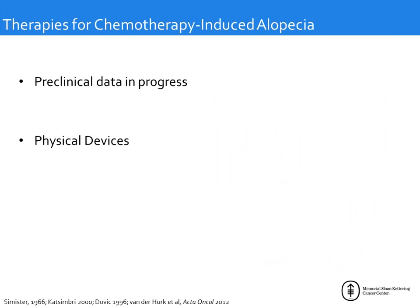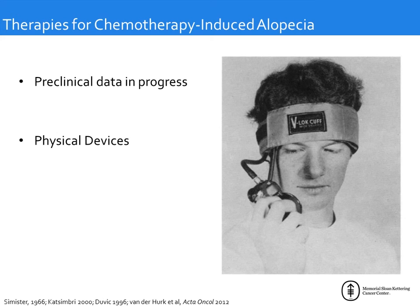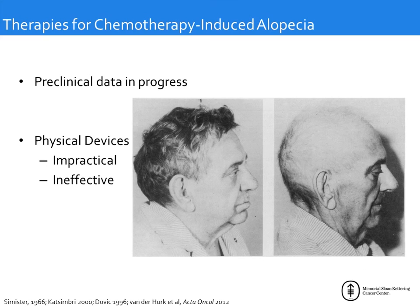To prevent hair loss, a tourniquet to prevent blood flow to the scalp was tried in Europe many decades ago, and a cuff device was also used — but these were not only impractical but ineffective. Tomorrow we will talk about what really works: scalp cooling.